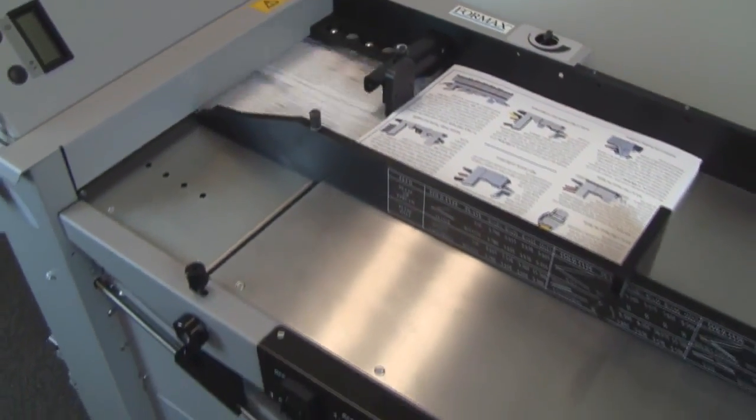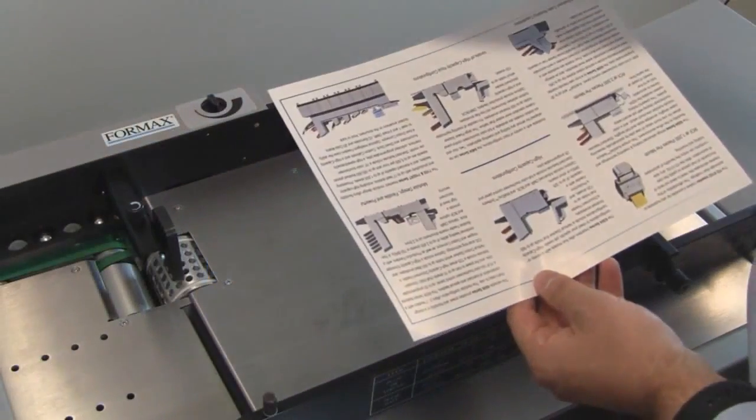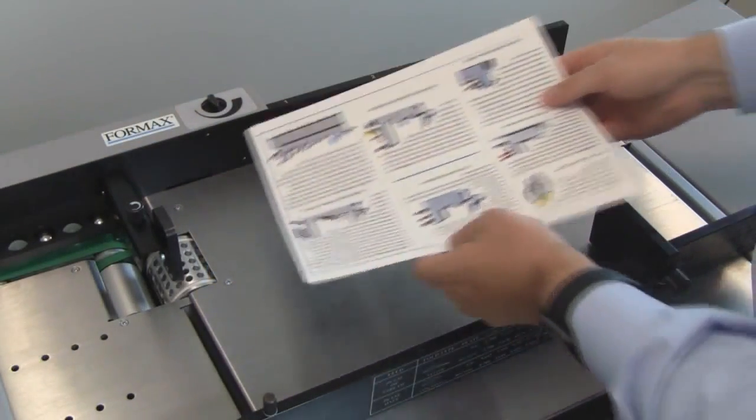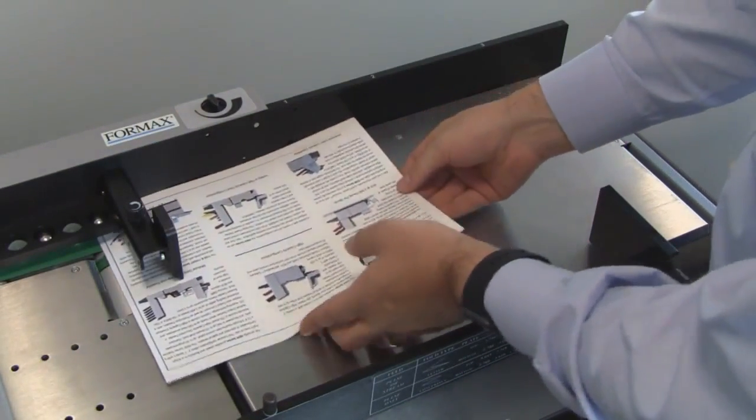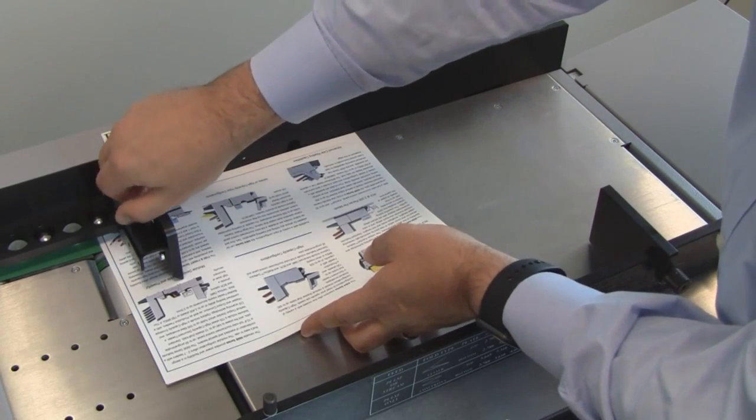There are five components to setting the air feed table. Step 1 is to set the in-feed gap. Take two sheets of paper and slide them under the bullnose, then lower the bullnose until there is a slight drag when pulling the paper back.